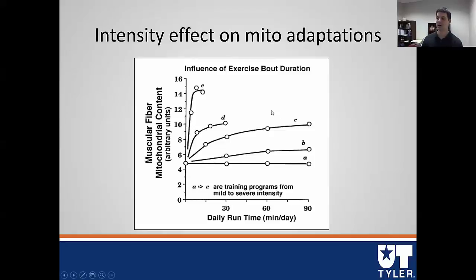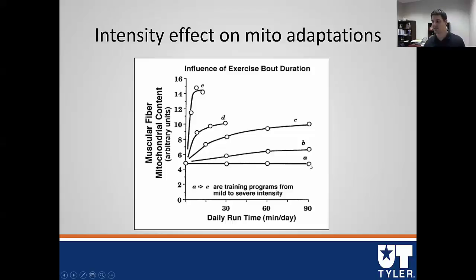Looking at mitochondrial content across training programs from mild to severe: mild intensity training, despite running for a long time, produces fewer mitochondrial adaptations if there isn't enough stress. The higher the intensity you go — from A to B to C to D — the more mitochondria you get. This is really illustrated by the concept of high-intensity exercise training.